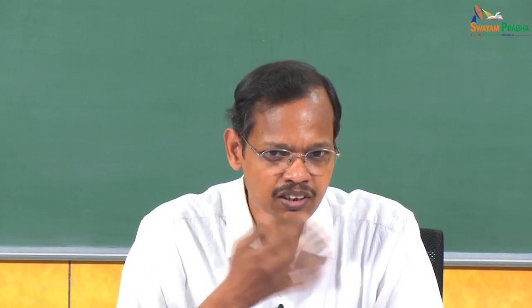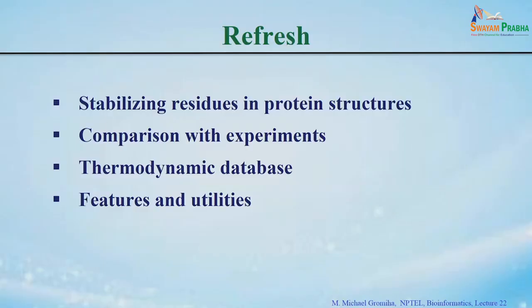In the previous lecture we discussed about identifying the stabilizing residues in protein structures. For example, if you know a structure, which residues are important for the stability. We use various criteria like hydrophobicity, long range contacts, and conservation to identify stabilizing residues in protein structures. In the later part, we discussed about the database — the thermodynamic database for proteins and mutants, the ProTherm.